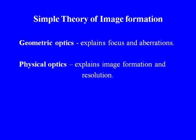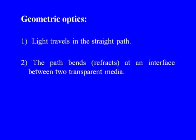The theory of image formation by a lens is important in microscopy. It can be discussed in terms of either geometric optics or physical optics. Geometric optics primarily explains focus and aberrations, whereas physical optics explains image formation in terms of contrast and resolution. In geometric optics, the two rules are: light travels in a straight path, and the light path bends or refracts at an interface between two transparent media.